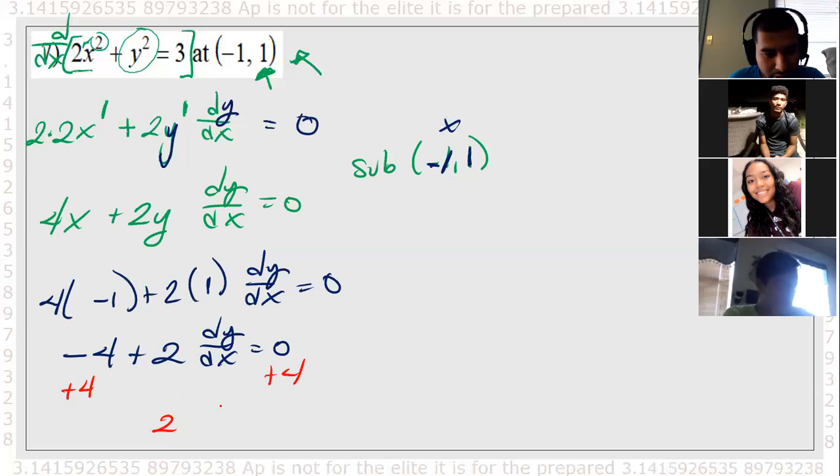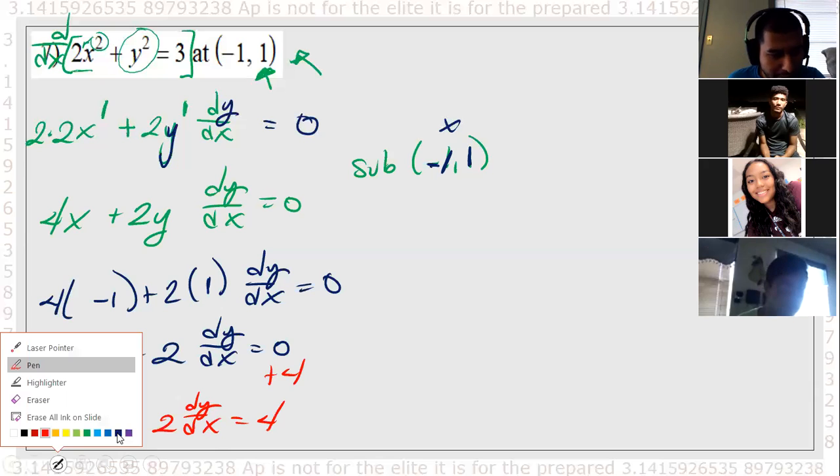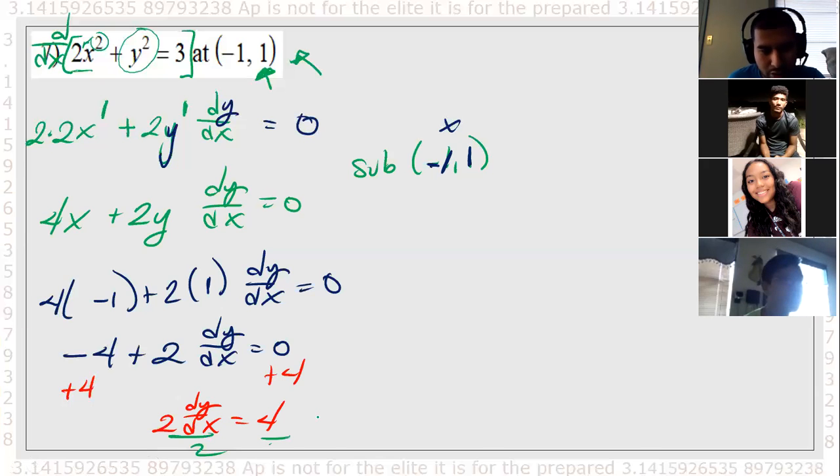So I got 2 dy/dx equals 4. And I could solve for it, right? Not that bad. If I just divide by 2, divide by 2. So my answer should be the slope of whatever this function was is 4 over 2, which is just 2.